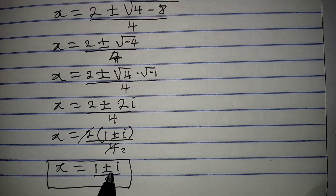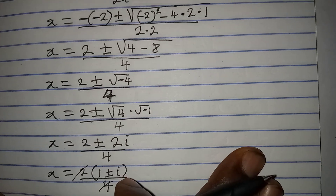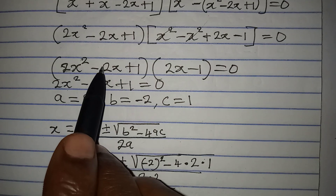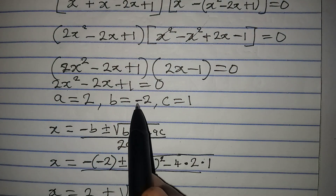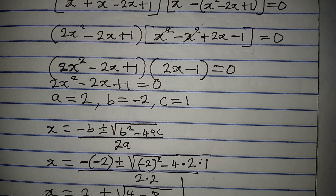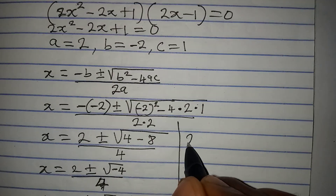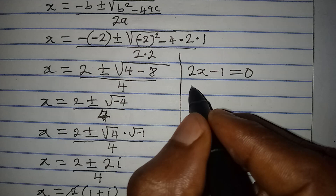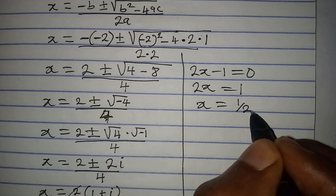Now for the second factor from the zero product rule: 2x minus 1 equals 0. This means 2x equals 1, so x equals 1 over 2.